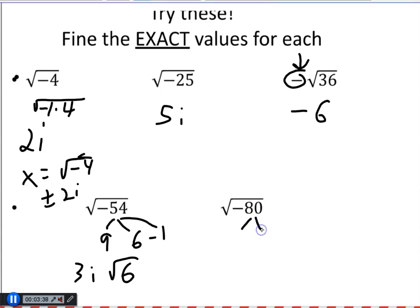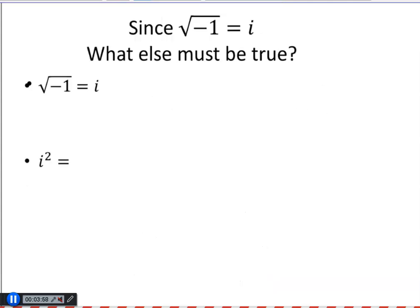All right? This one, 80, again, is 16 times 5. We're looking on our reference cards. And 16 is the perfect square number that goes into 80. And if it helps, put that negative 1 there. So, the 16 comes out as a 4. The negative 1 comes out as i. And the 5 is stuck inside. Okay? I've already alluded to this. So, that's negative 1.